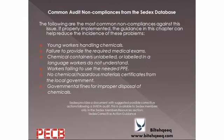Workers are failing to use the needed PPE. In some organizations, workers are not using the required personal protective equipment — maybe these are not available, or workers do not feel that PPE use is a necessity. There is no chemical or hazardous material certificate from the local government, as some companies are not obtaining the required legal certificate for the usage of hazardous chemicals or materials. Governments may impose fines for improper disposal, as some organizations are disposing of hazardous material in ways not allowed by the government. These are some common non-conformities most often noted during audits.